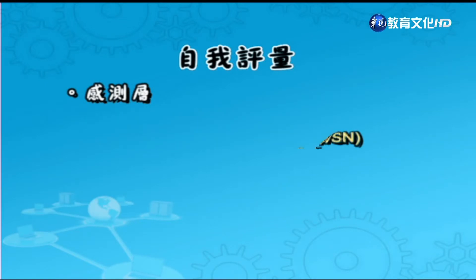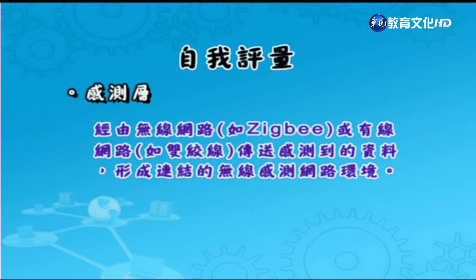WSN（無線感測網路）是裝有感測元件的網路，例如壓力觸覺感應器、光感應器、超音波距離感應器、加速度計傾斜感應器、電子羅盤方向感應器、溫濕度感應器、或陀螺儀等，可以感測運動，經由無線或有線網路傳送感測到的資料，形成連接的無線感測網路環境。